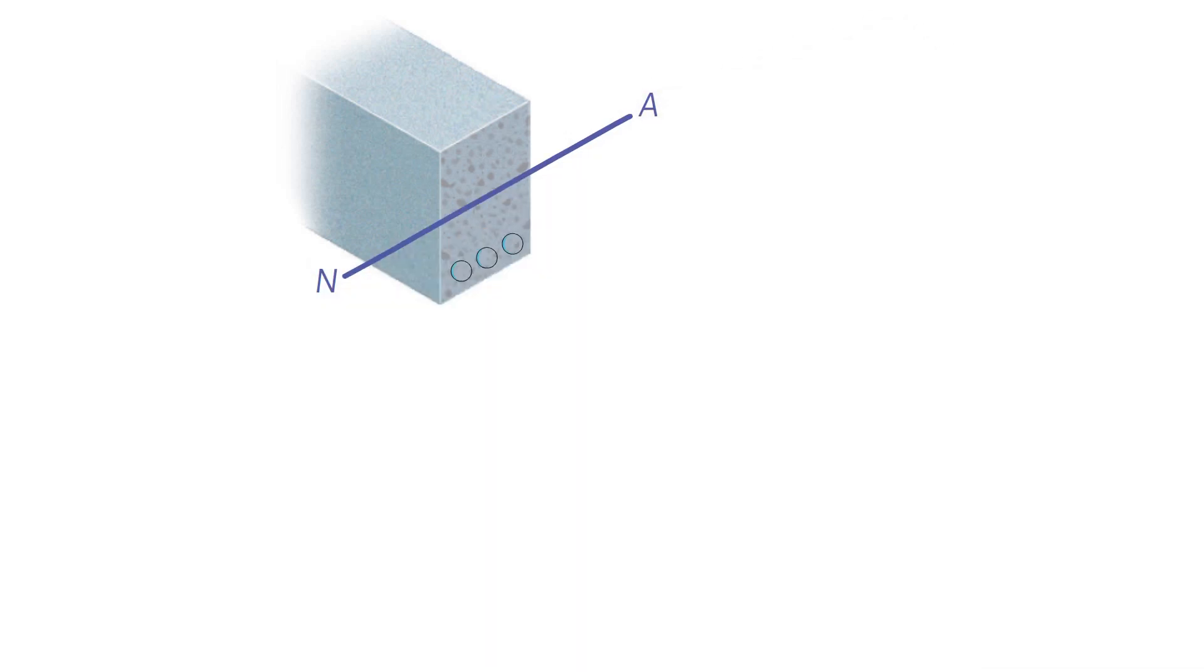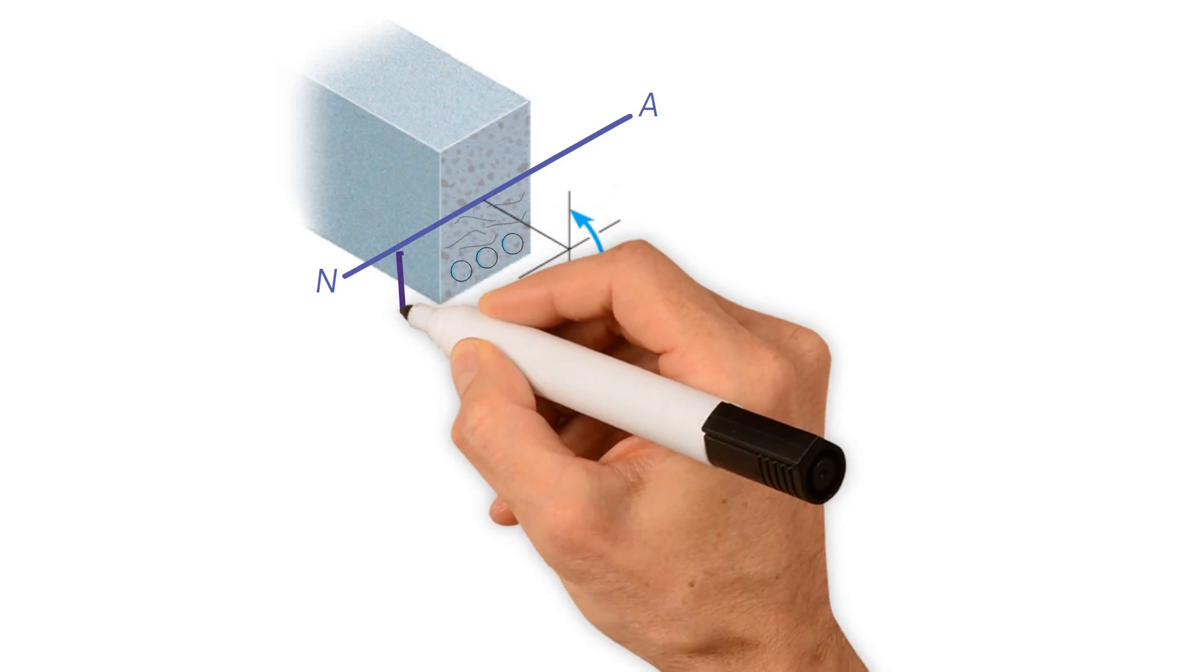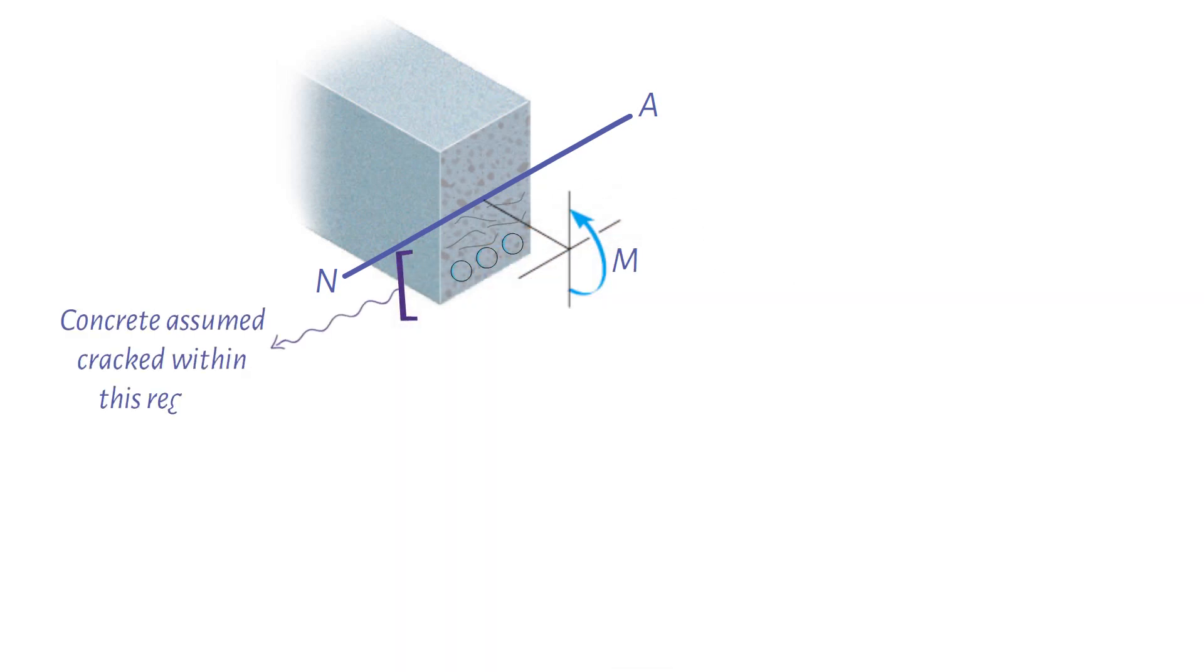All beams subjected to pure bending must resist both tensile and compressive stresses. Concrete, however, is very susceptible to cracking when it is in tension, and therefore by itself, it will not be suitable for resisting a bending moment.